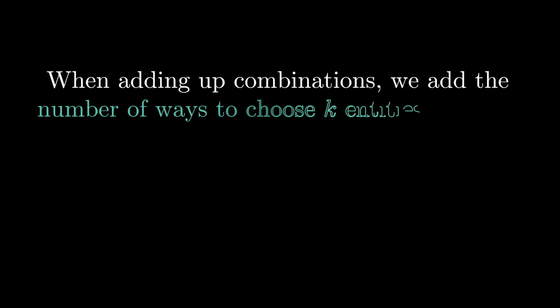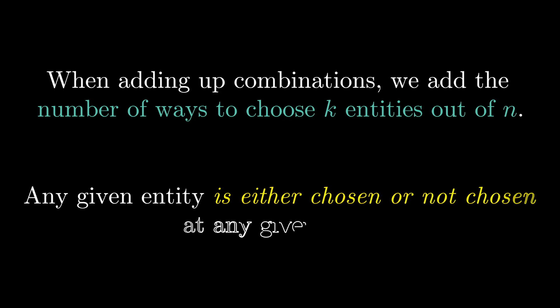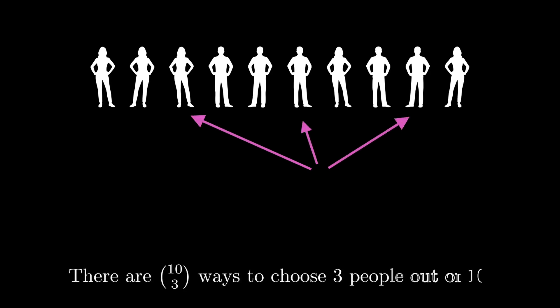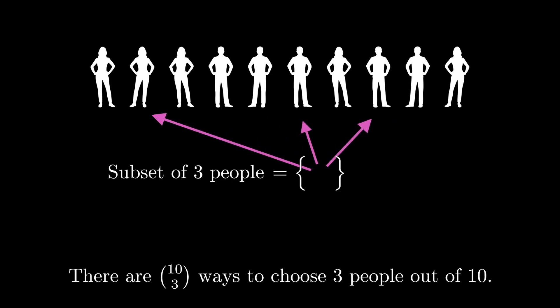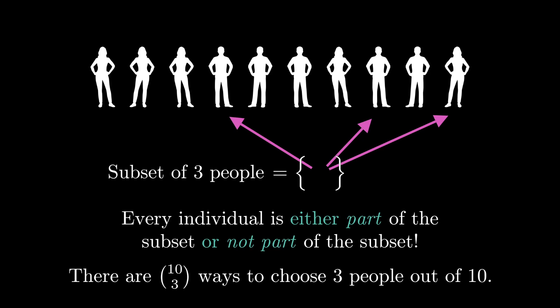When adding up combinations, what we do is we add up the number of ways to choose k entities out of n. Well here's the thing, right? Out of the n entities any given entity is either chosen or not chosen at any given time. There's absolutely no other way it could be. So something like 10 choose 3 would mean that there are that many ways to choose 3 people out of 10. There are that many possible subsets of the total of 10 entities that consist of exactly 3 entities, and for each of those subsets any given object out of the original 10 is either part of the subset or not part of the subset. Well I'll leave you to work out the finer and more rigorous details of the proof, but this is really the fundamental connection between combinatorics and powers of two.